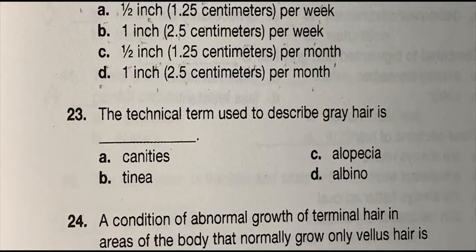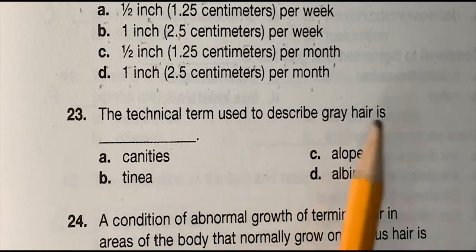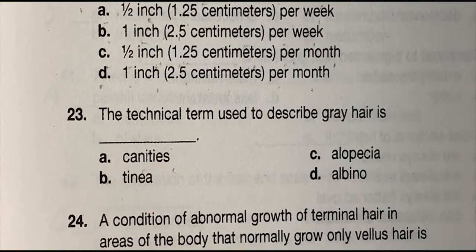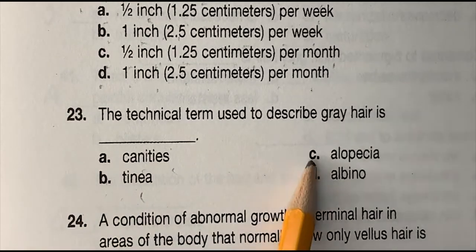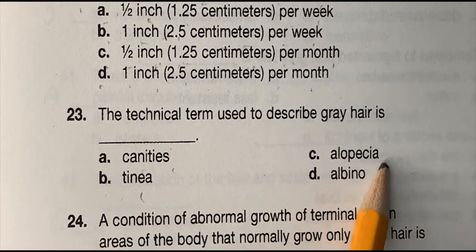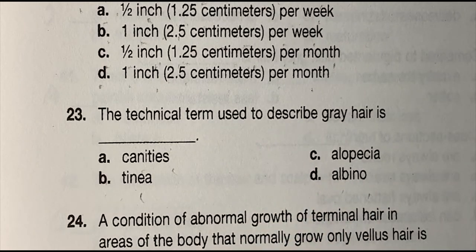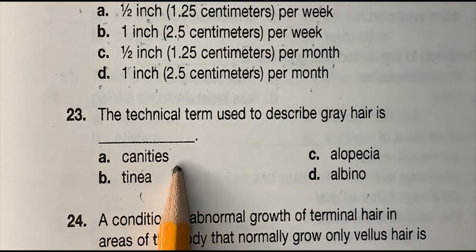Number 23: the technical term used to describe gray hair is blank — (a) canities, (b) tinea, (c) alopecia, or (d) albino. The correct answer is (a) canities.